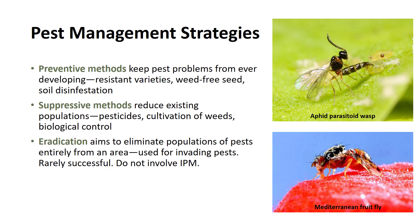Other preventive methods might include preplant soil disinfestation such as fumigation, heat treatment, or soil solarization, removal of overwintering sites, and the selection of planting sites that are not already infested with pests that attack the intended crop. Suppressive pest control methods reduce existing pest populations to tolerable levels. Most pest control actions fit into this category and include the release of biological control agents, mowing, cultivating weeds, or in-season pesticide sprays. The management method chosen does not usually eliminate pests but limits their damage or competition.